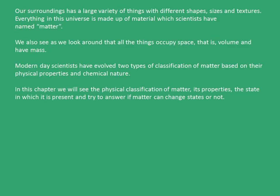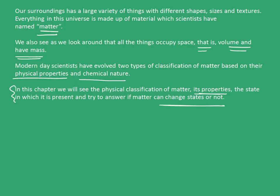Our surroundings has a variety of things with different shapes, sizes, and textures. Everything in this universe is made up of material, which scientists have named Matter. All things occupy space, that is, volume, and have mass. Modern day scientists have evolved two types of classification of matter based on their physical properties and chemical nature. In this chapter, we will see the physical classification of matter, its properties, the state in which it is present, and whether matter can change states.